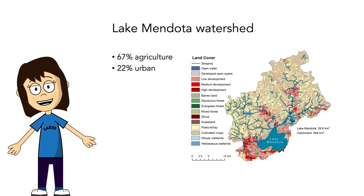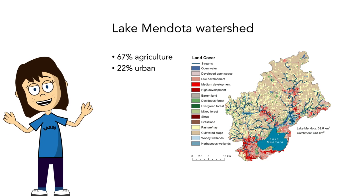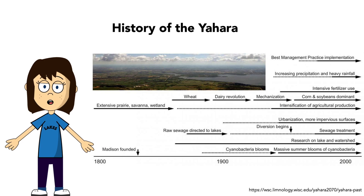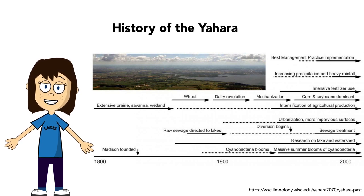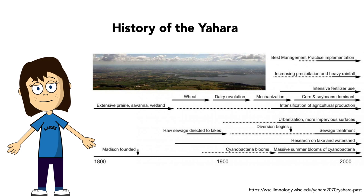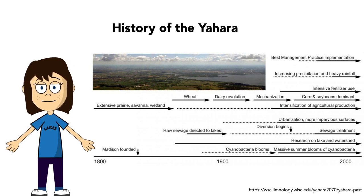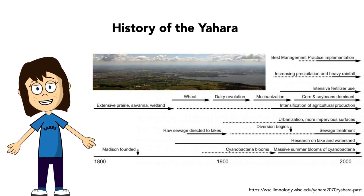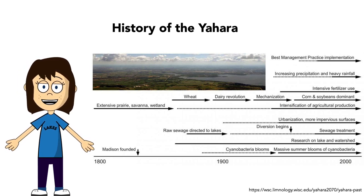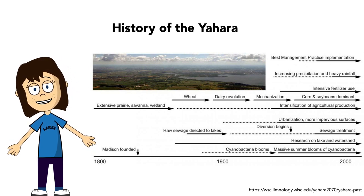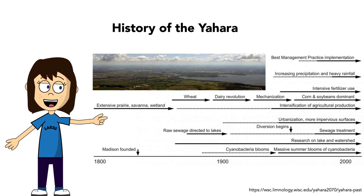One thing we haven't covered yet is the idea of time, and that history matters. Present-day ecology is shaped and formed by what's happened to that landscape in the past. Understanding the history of a location can be really important to understanding the population or community dynamics happening today. So if we're thinking about Lake Mendota specifically, it's good to know the history of the Yahara watershed.